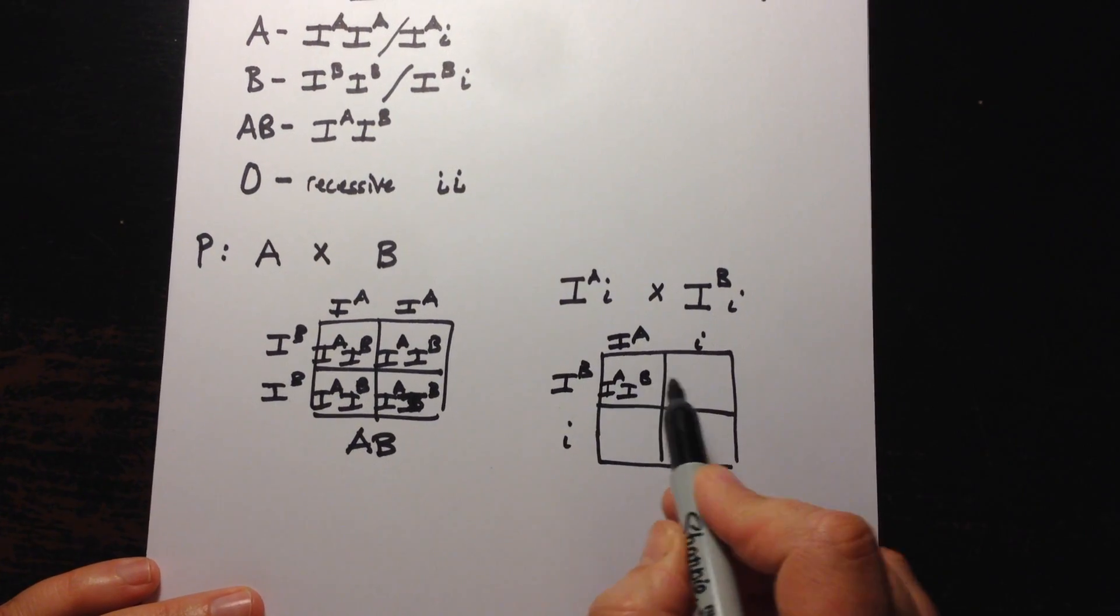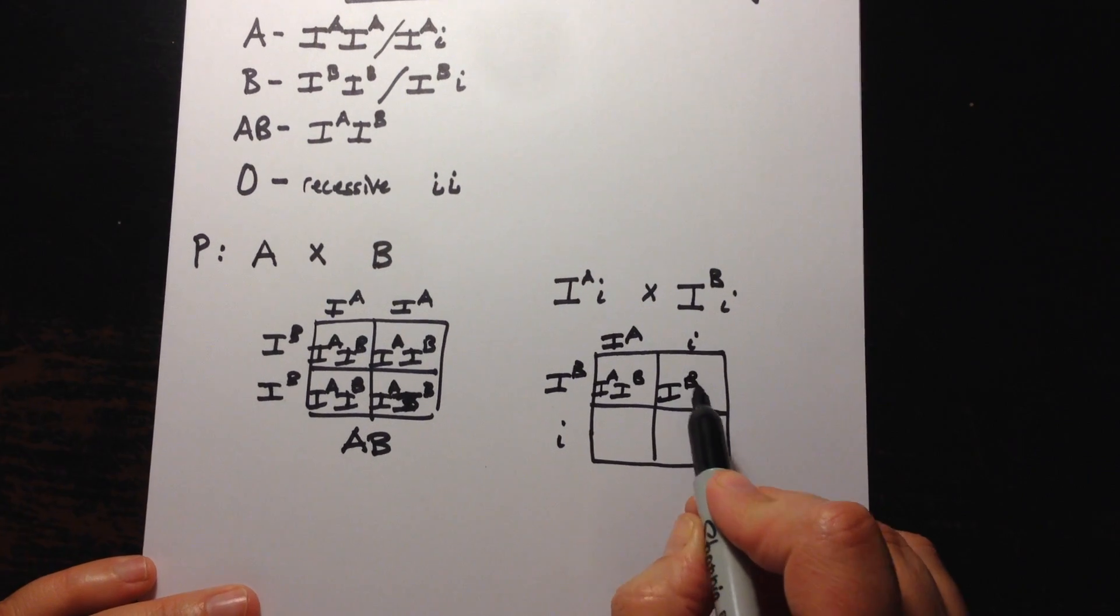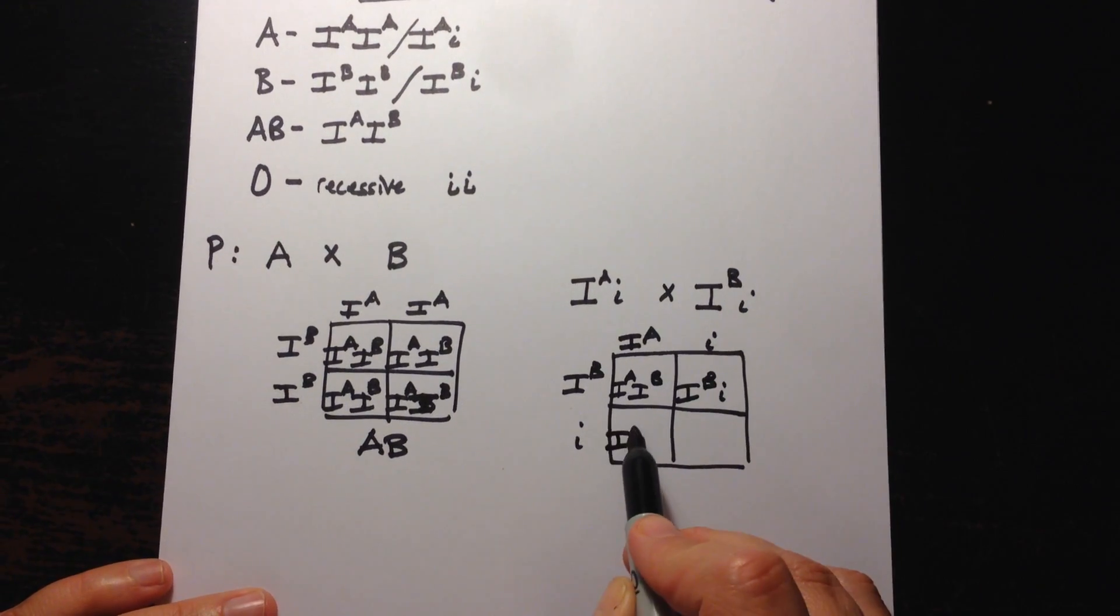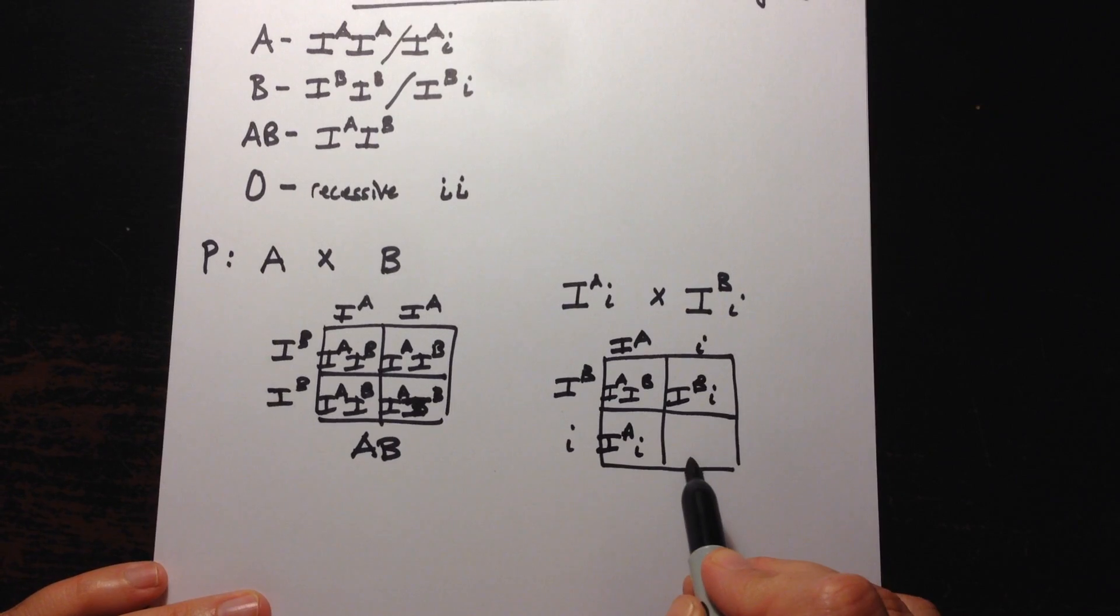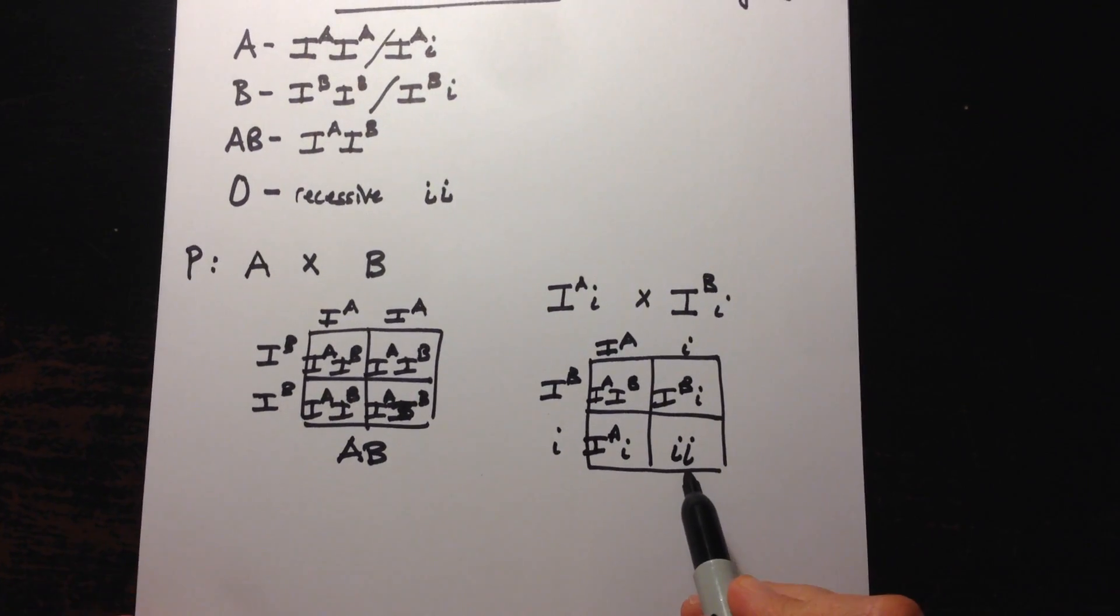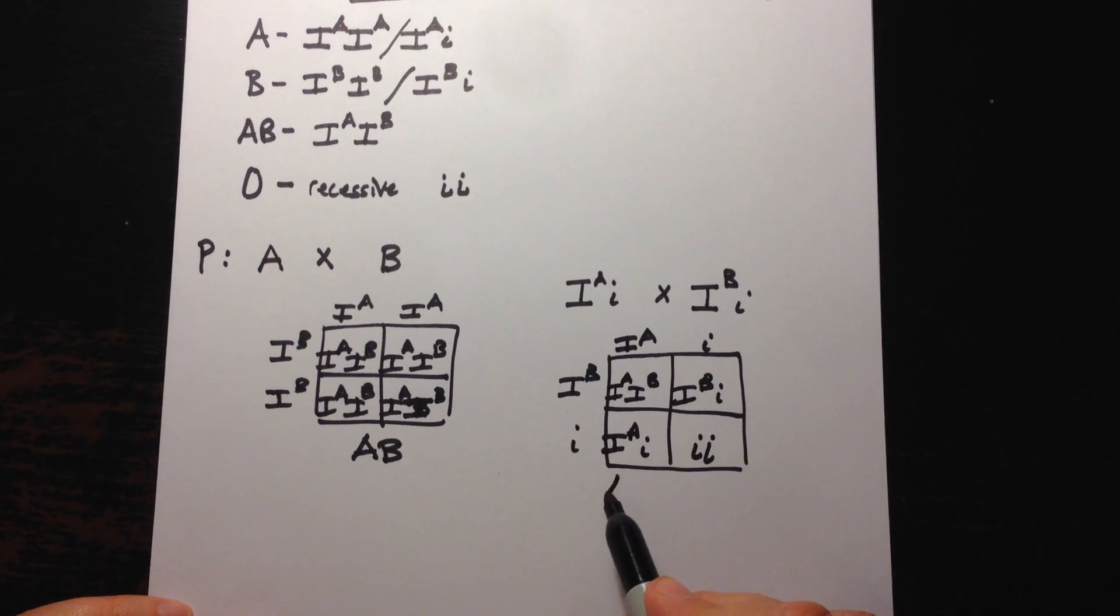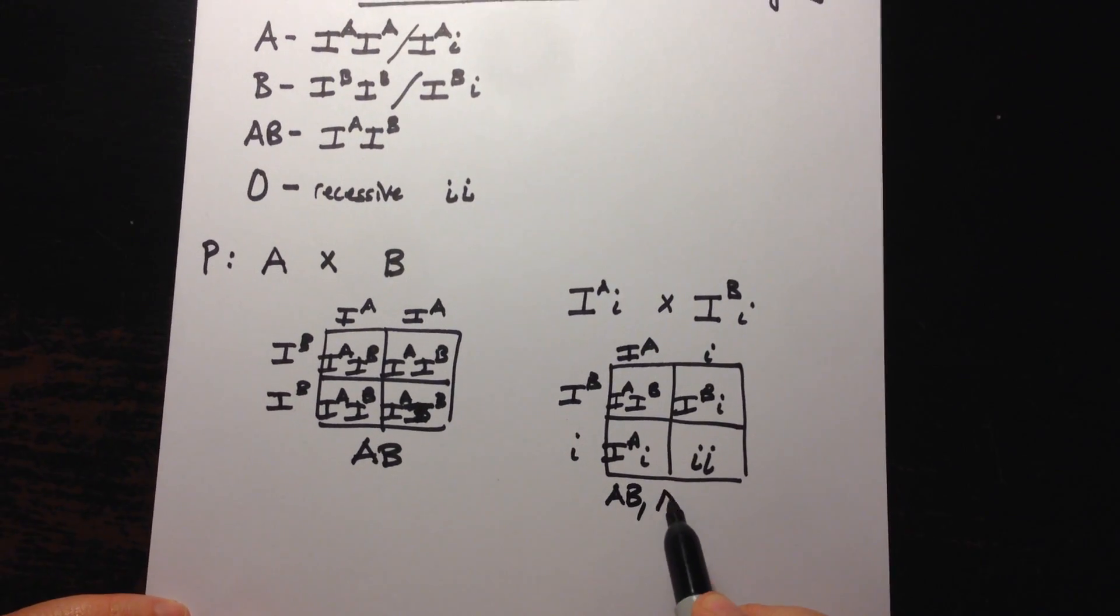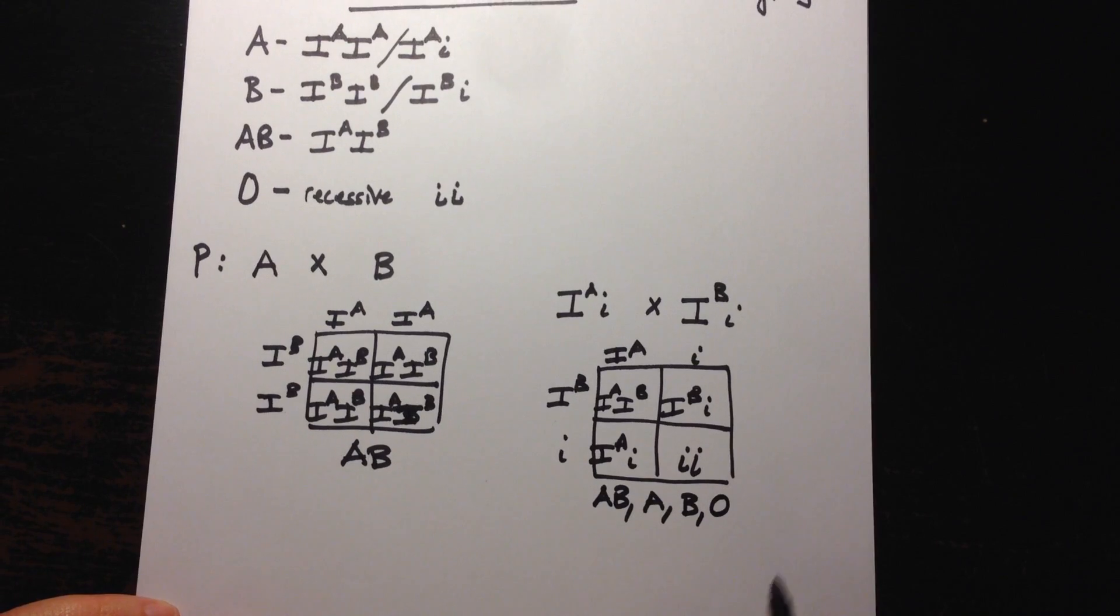There we have a type AB blood. Over here we're going to have type B blood. Then here we'll have type A blood and look what happens here when you combine the two recessive alleles you get a type O. So you can make type AB blood, A blood, B blood or type O blood.